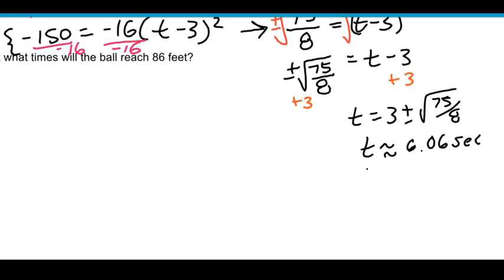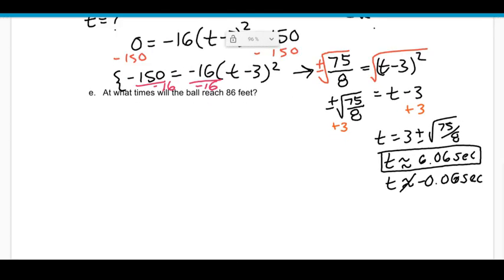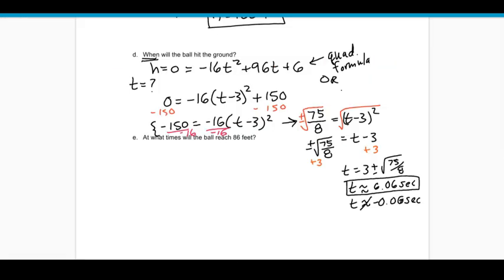And the other answer you're going to get is actually negative. And because this is an application problem, you get to dismiss this because in this case, I'm not going to throw the ball up after some negative time has passed. It doesn't make any sense. So I get to dismiss this. So we can say that at about 6.06 seconds, the ball would hit the ground.